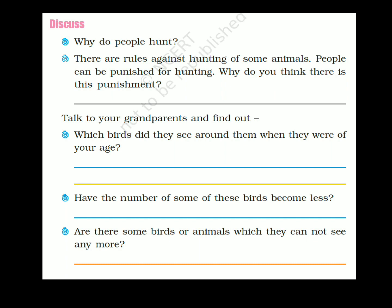Talk to your grandparents and find out which birds they saw around them when they were your age. Birds such as sparrow, parrot, maina, pheasant, crow, peacock, and dove were commonly seen. The population of sparrows and parrots has greatly decreased over the years. Birds like dove, sparrow, and parrot are rarely seen nowadays.